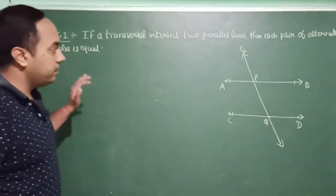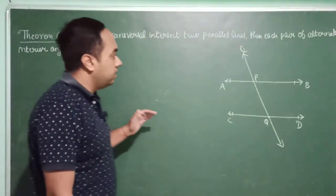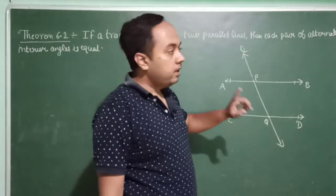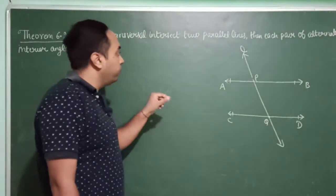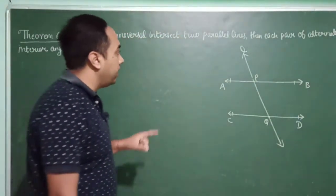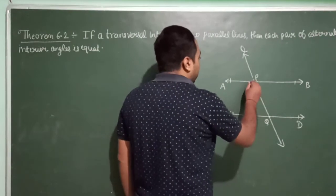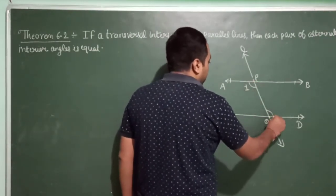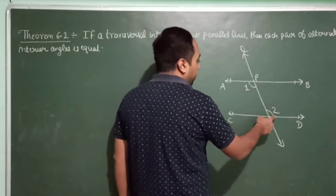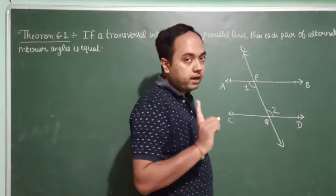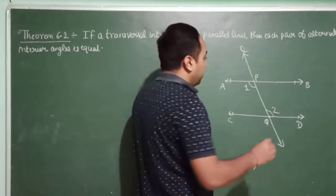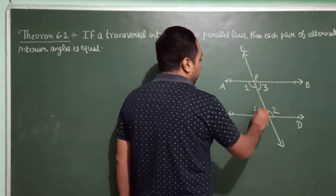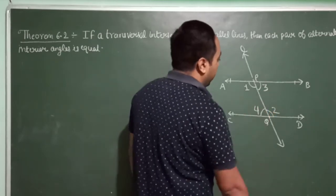So what is given is that a transversal intersects two parallel lines, and what we will prove is that alternate interior angles are equal. Suppose this is angle 1 and this is angle 2 — we will prove angle 1 is equal to angle 2. There is one more pair of alternate interior angles: angle 3 and angle 4.